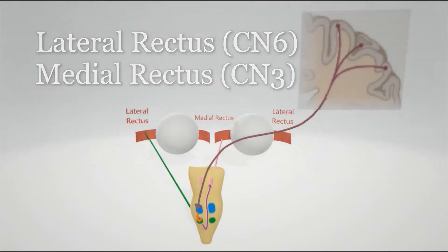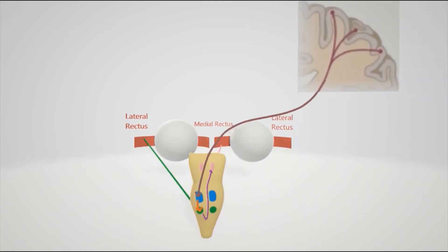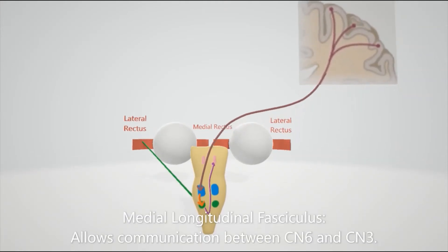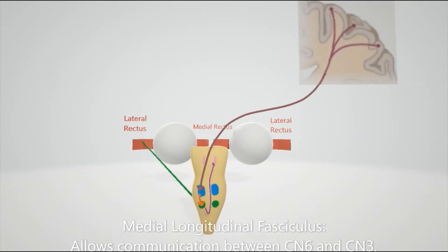So how does that work? That's where the medial longitudinal fasciculus comes in. This allows communication between the two nucleus, the oculomotor and the abducens nucleus. The medial longitudinal fasciculus is right here in purple.